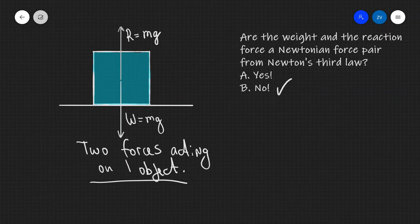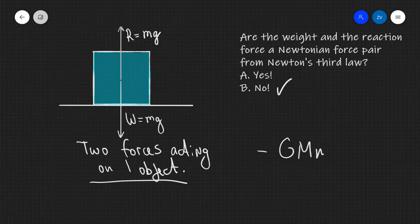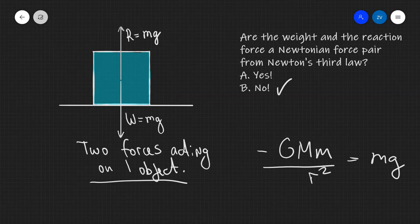Additionally, the two forces are completely different in character. If you are a second year student, you already know that the weight stems from the gravitational force, which is minus GMm over r squared, and this is what provides the weight.